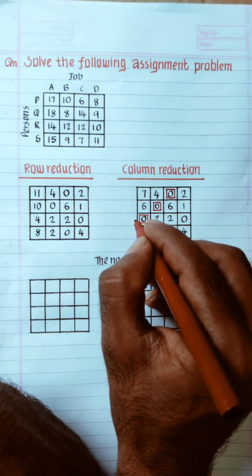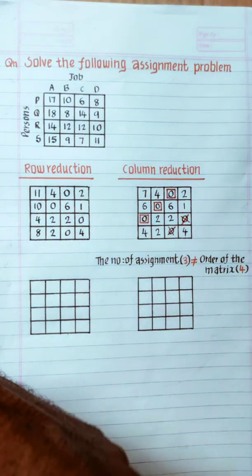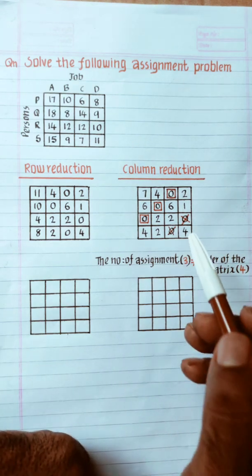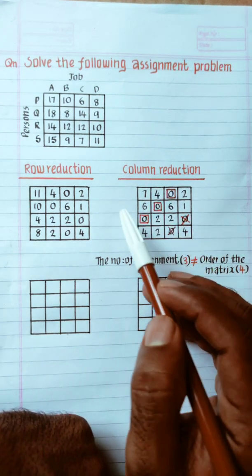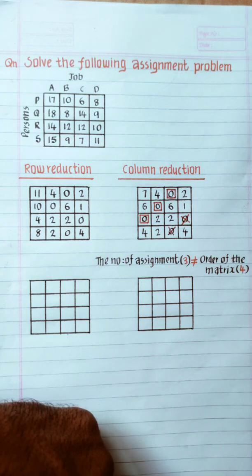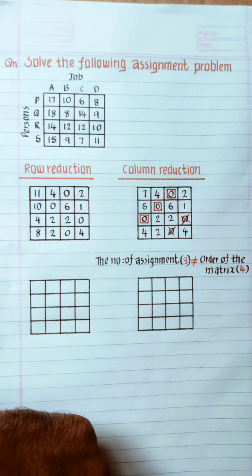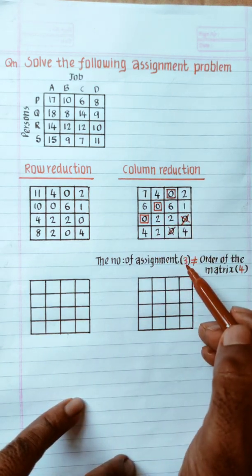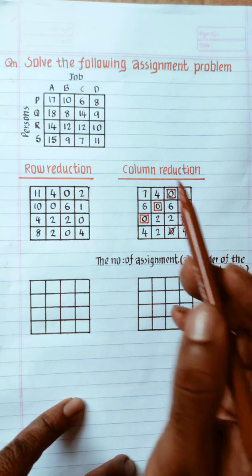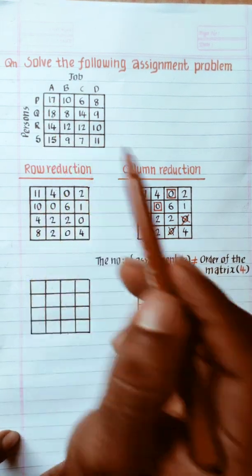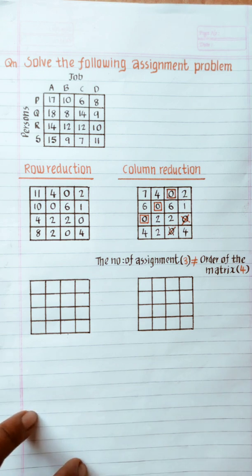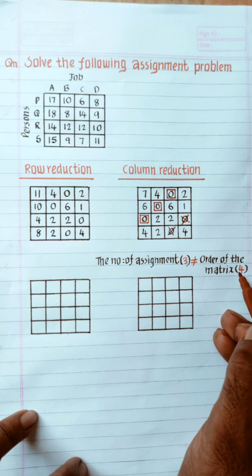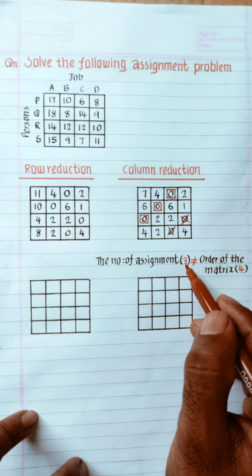If you want to cross the row and column lines, you can choose the appropriate row and column. If you want to cross the row, the number of assignments is 1, 2, 3. The order of the matrix is 4 rows, 4 columns — that is a 4 by 4 square matrix. This is the optimal solution.